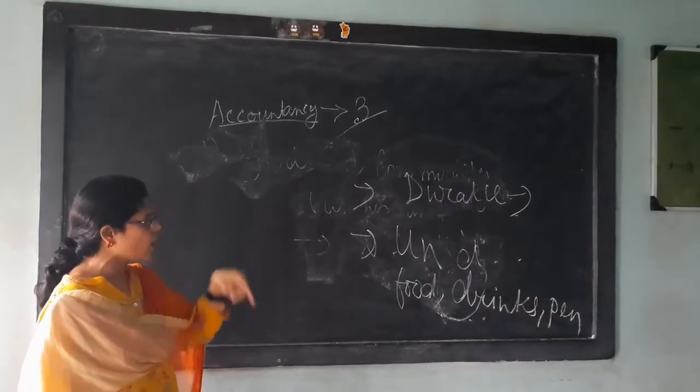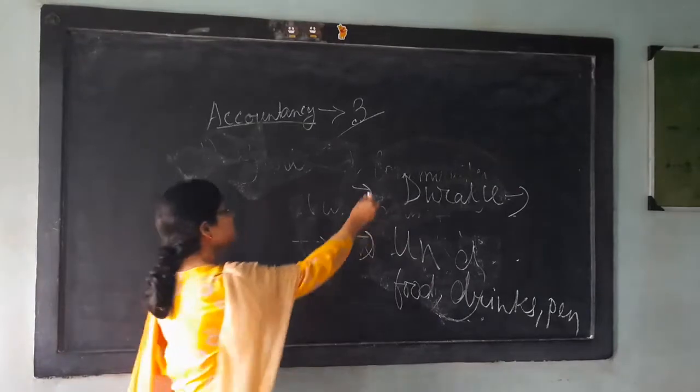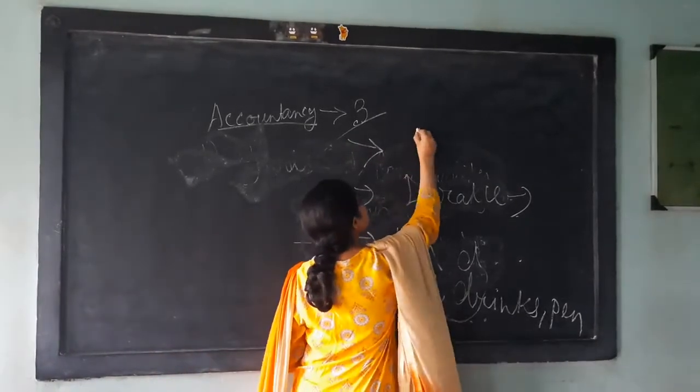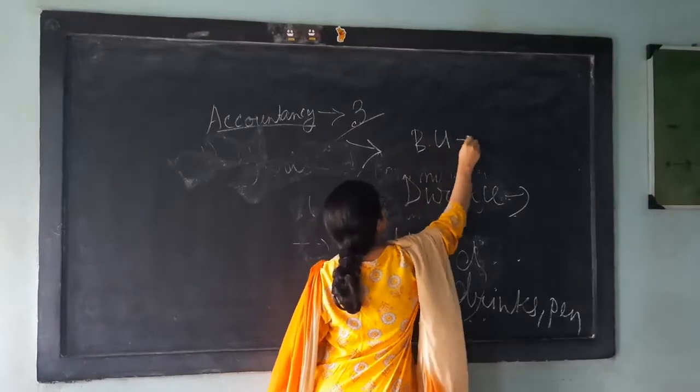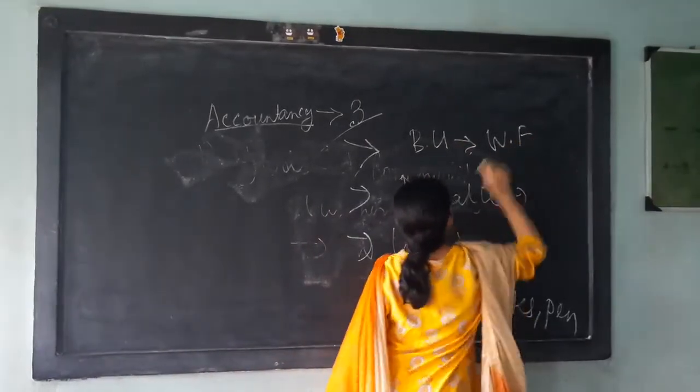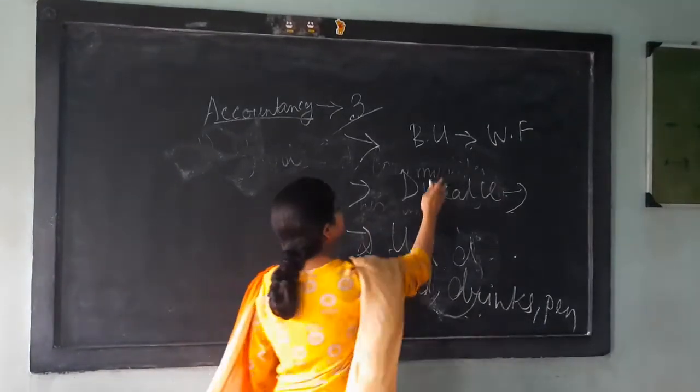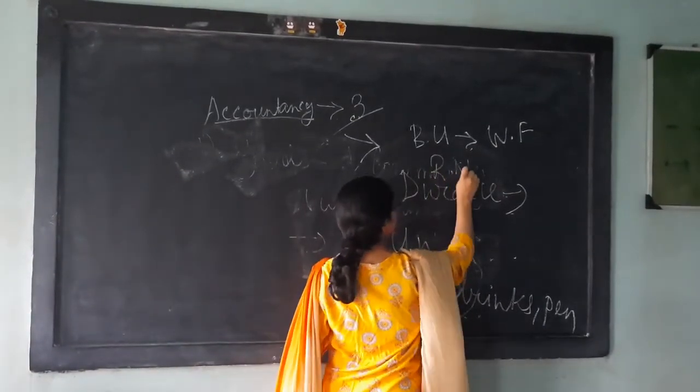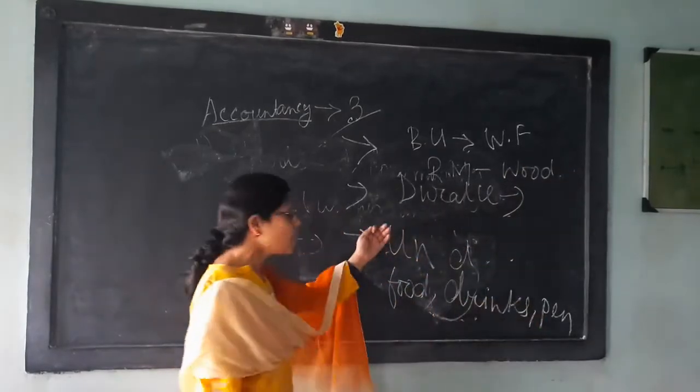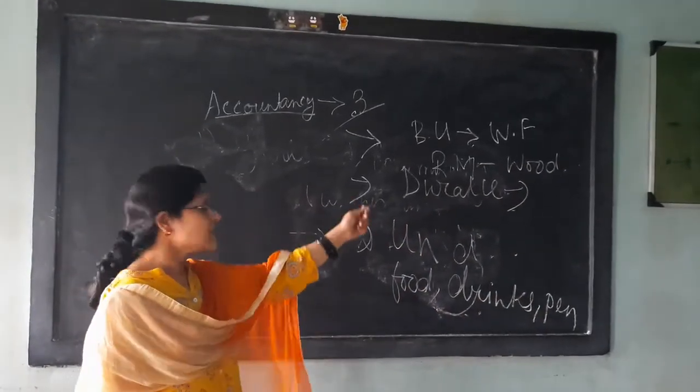I will just give you an example. Suppose the business unit is making food and fun. So what is the raw material? The raw material is food. Yes or no? Food. So food is what type of item? Non-durable. This is non-durable.